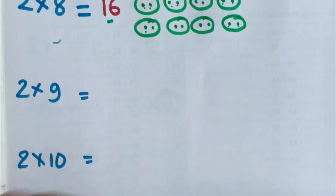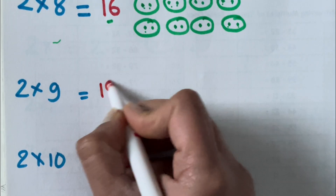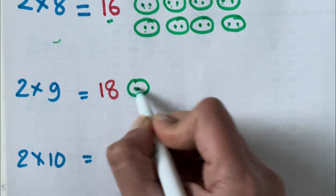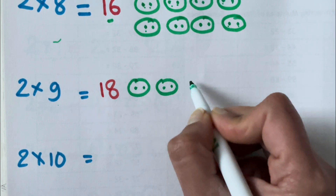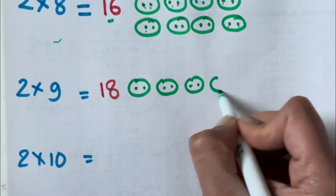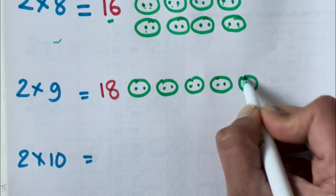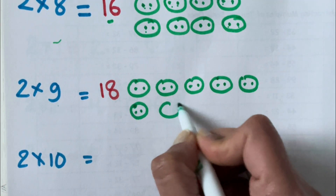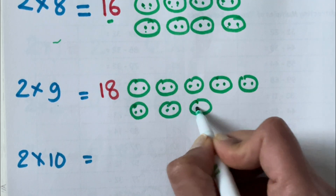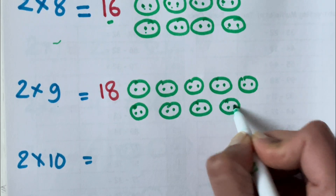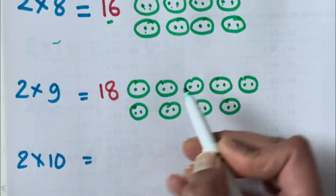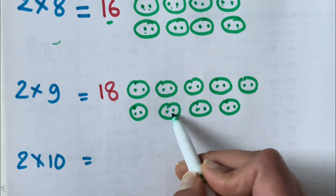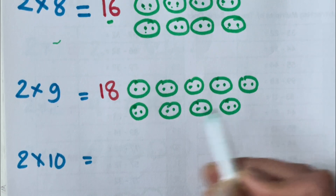2 times 9 is 18. 1, 2, 3, 4, 5, 6, 7, 8 and 9 groups. That is 1, 2, 3, 4, 5, 6, 7, 8, 9, 10, 11, 12, 13, 14, 15, 16, 17 and 18.